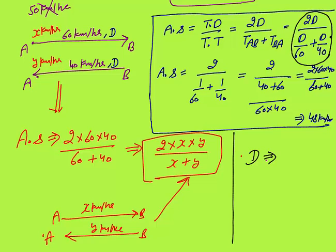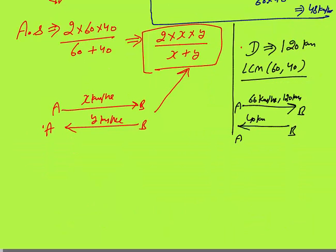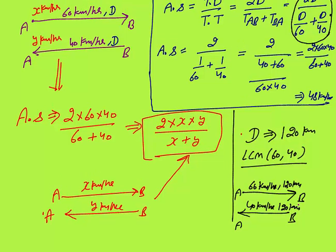Since d does not matter, choose d as a multiple of both speeds 60 and 40 — specifically the LCM, which is 120 km. Taking d = 120 km ensures the travel times come out as whole integers, making the calculation much easier. You can solve the question in less than 20 seconds this way.